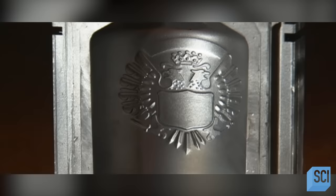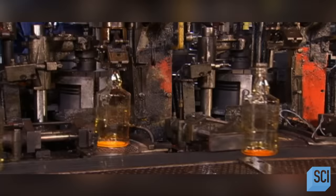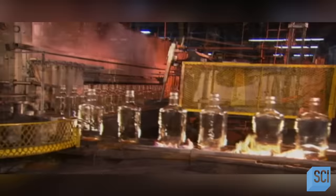This run is producing 375 milliliter liquor bottles also out of clear glass. But this mold has a special feature, a recessed insignia on one of the walls, which produces a raised insignia on the front of the bottle. After the bottles leave the forming machine, they travel through flames. Otherwise, they would cool down too quickly and crack from thermal shock.